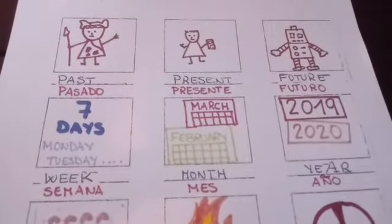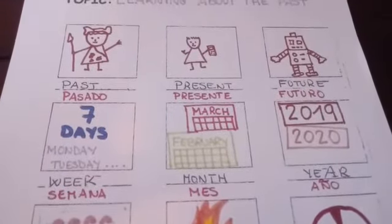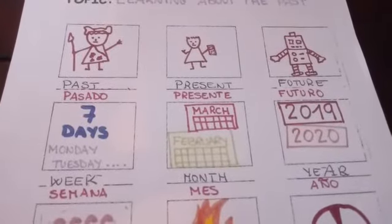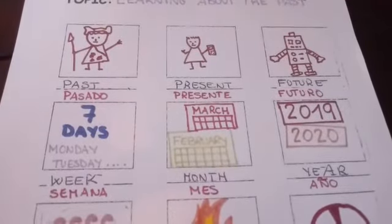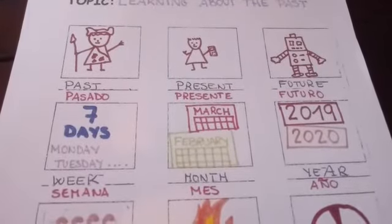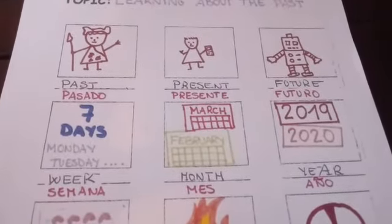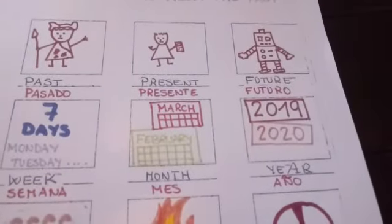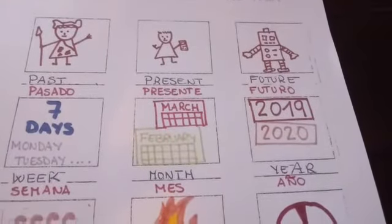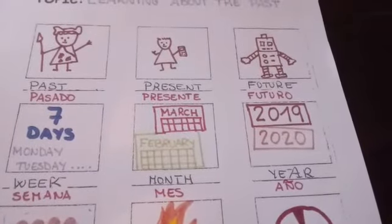The months: January, February, March, April, May, June, July, August, September, October, November and December. The years — last year was 2019, this year is 2020.